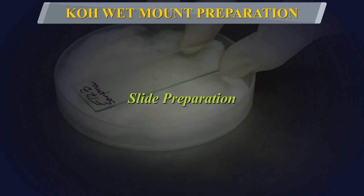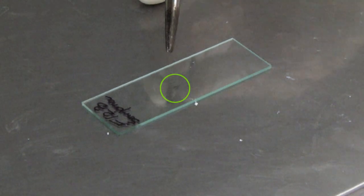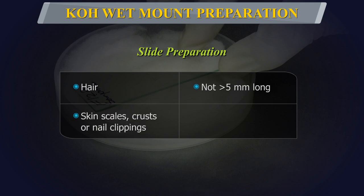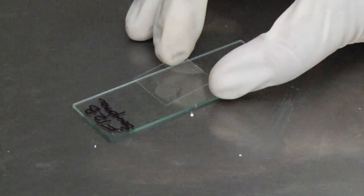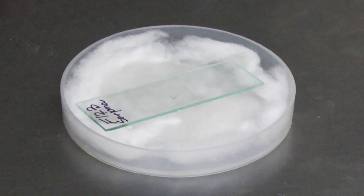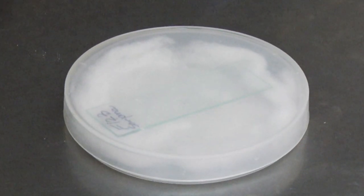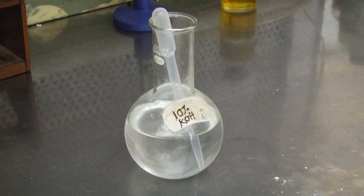Slide Preparation: Transfer the specimen with the help of sterile forceps onto a labelled slide. For better clearing, hair should not be more than 5 mm long and skin scales, crusts or nail clippings should not be more than 2 mm across. Add a drop of the potassium hydroxide solution on the specimen and cover with a cover slip. Place the preparation in a sterile petri dish lined with damp cotton wool or filter paper to prevent drying out.